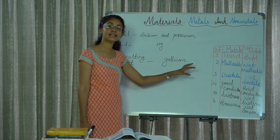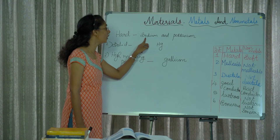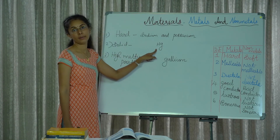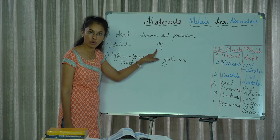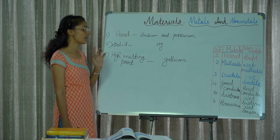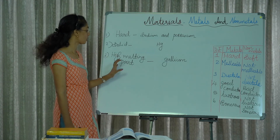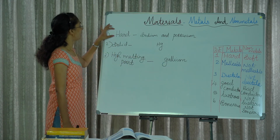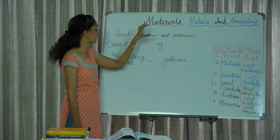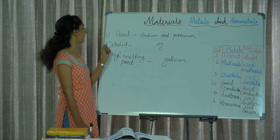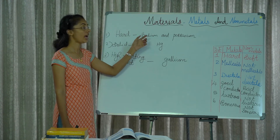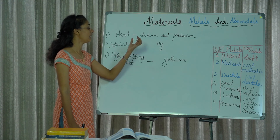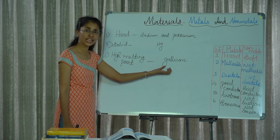In the case of metals, metals are hard — except sodium and potassium, which are soft. Metals are solid — except mercury, which is in liquid form. Metals show a high melting point — except gallium, which melts at room temperature.